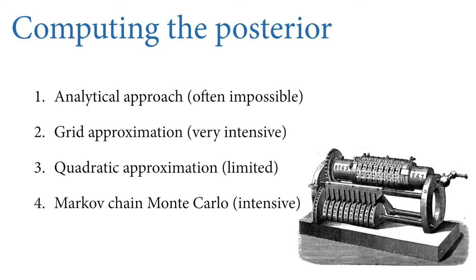So this lecture is about number four: Markov chain Monte Carlo. Markov chain Monte Carlo is intensive, but not very intensive — models that would take a second to fit with quadratic approximation might take a minute with Markov chain Monte Carlo. But when you get into things that take 10 minutes with quadratic approximation, they could take hours or days with Markov chain Monte Carlo. So why would we ever use it? The answer is because it's much more capable, it has many fewer limitations. In fact, it has become essential in many areas of science because it makes it possible to fit models to data that essentially nobody could fit before.